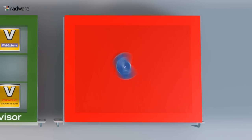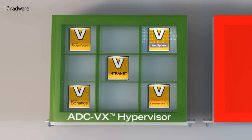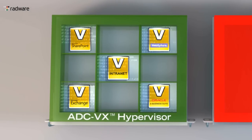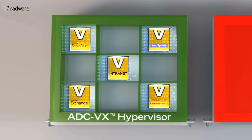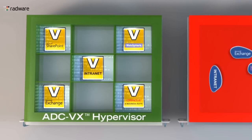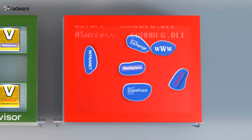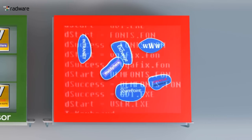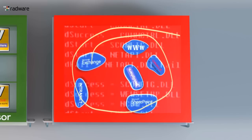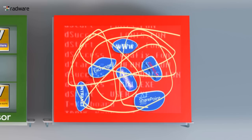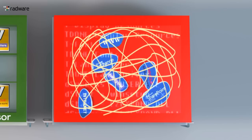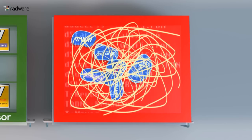With Radware's ADC-VX, each VADC has its own configuration file. This eliminates the risk of misconfiguration and accelerates troubleshooting. In the shared ADC, all applications share a single, complicated configuration file, which greatly increases the risk of misconfiguration.